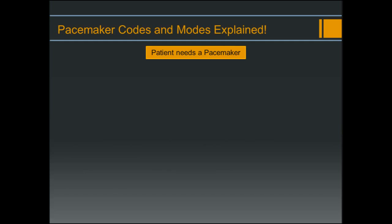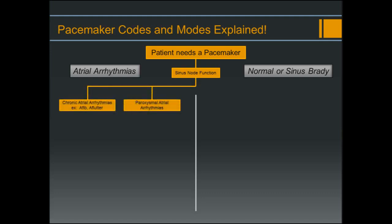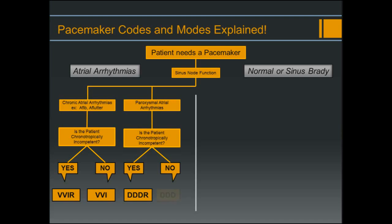When selecting a pacing mode, first ask: is the patient in an atrial arrhythmia or normal sinus brady? For atrial arrhythmias, is it chronic or paroxysmal? If chronic and the patient is chronotropically incompetent, the mode should be VVIR; if not incompetent, VVI (or VVIR) is appropriate. If the atrial arrhythmia is paroxysmal and the patient is chronotropically incompetent, the best mode is DDDR. If not incompetent, DDD is the best choice.